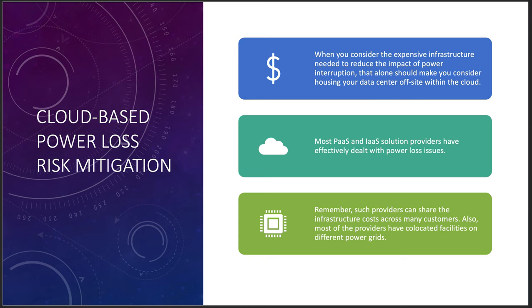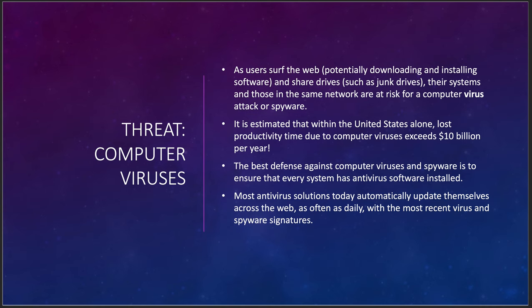Every data center has some kind of power generator — diesel, gas, or newer solar-based systems with large battery racks. These provide power during long-term outages. Cloud-based power loss risk mitigation requires you to architect for multi-region, multi-zone deployments so you don't need to buy a lot of hardware. Cloud providers share infrastructure costs across many customers, so you don't pay much, and you can speed up customer service if you architect correctly.